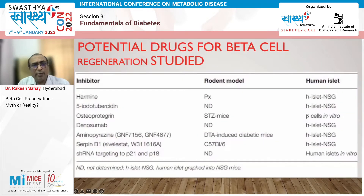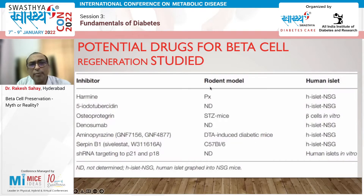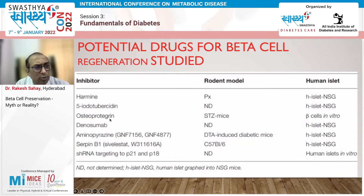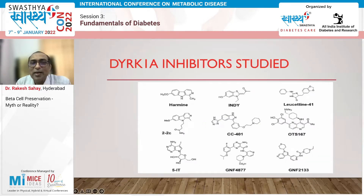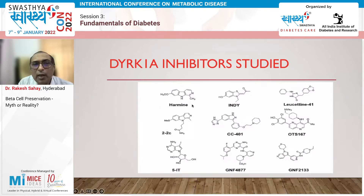The most commonly studied DYRK1A inhibitors include harmine, which has been studied in human islet cells and rodent models. Others such as INDY, leucettine-41, and 5-IT have also been studied by different researchers. Osteoprotegerin and denosumab, drugs related to bone development, have also been studied in relation to beta cell development.